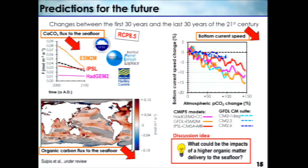The last variable is the organic carbon flux to the seafloor. Most of the ocean here is red, meaning we have more organic carbon reaching the seafloor at the end of the century than today. That potentially has strong impacts: more organic matter coming to the seafloor means more organic matter to respire within sediment, and it could also mean more bioturbation and more irrigation. So again, it's very hard to predict what the impact of all these things will be as long as we don't have a model that takes into account all these variables, their interaction, and how they affect calcite dissolution at the seafloor.